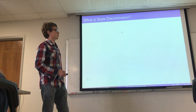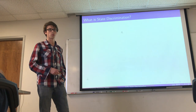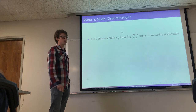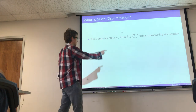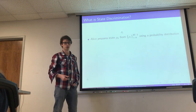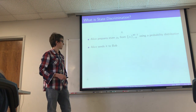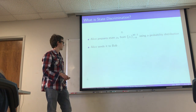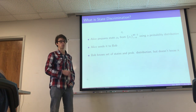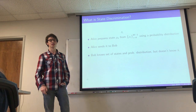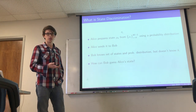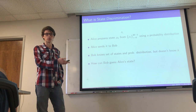Some background on state discrimination. The problem can be phrased like this: Alice has a set of non-orthogonal states and picks state ρ_k from that set with a certain probability. She sends it to Bob. Bob knows both the set of states and the probability distribution she is using. The question is: how can Bob guess the state he was sent?